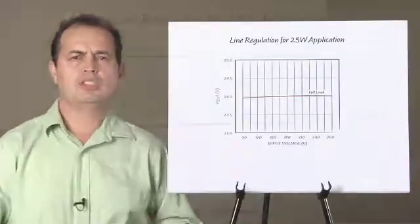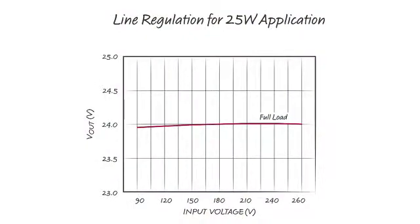This plot shows typical line regulation results for a 25 watt application with voltage regulation. Over the 90 volt to 260 volt universal input range, regulation is better than 0.5%.